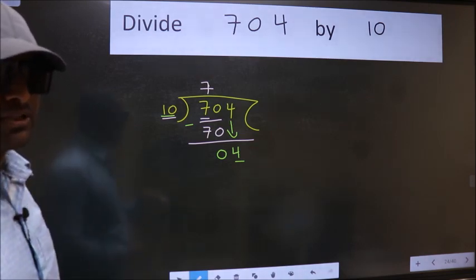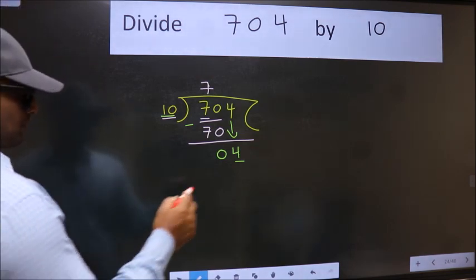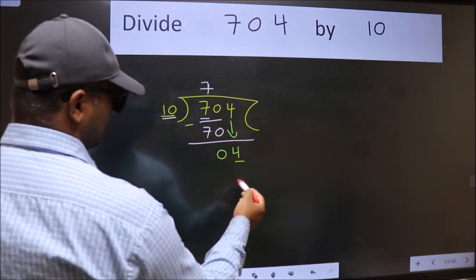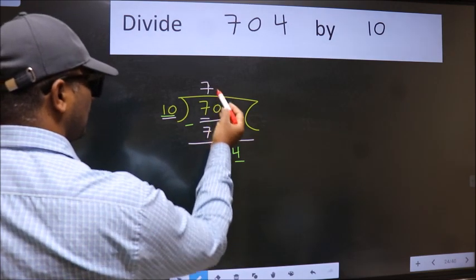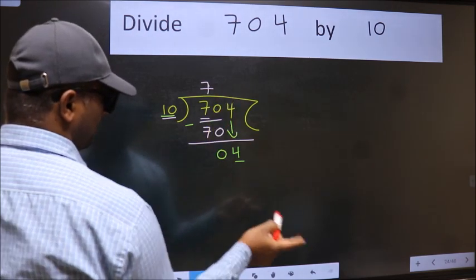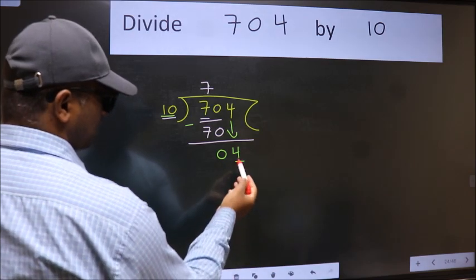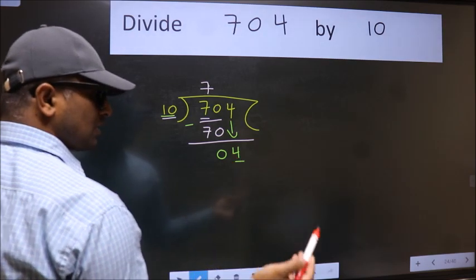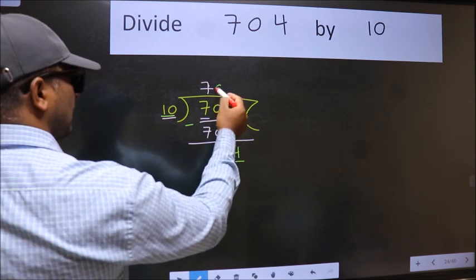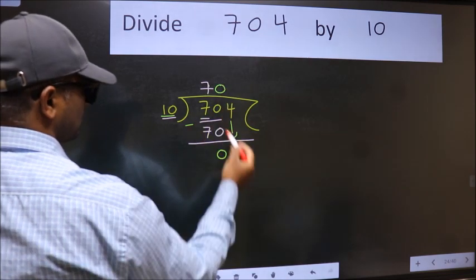Instead of that, what we should think of doing is which number should we take here. If I take 1 we will get 10. But 10 is larger than 4. So what we do is we take 0. So 10 into 0.